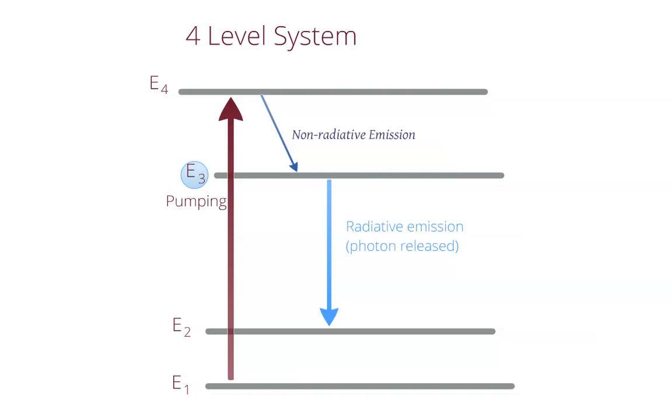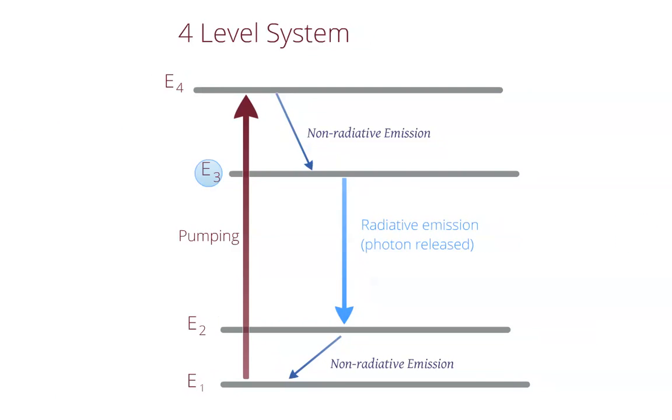However, in the four-level system, once the atom is in state E2, it once again decays very rapidly to an even lower state E1. This means that the E2 state is nearly empty, so any reasonably large population of atoms in the E3 state will cause a population inversion relative to E2. This allows stimulated emission and lasing to occur without needing to pump as much energy into the system as with the three-level laser.